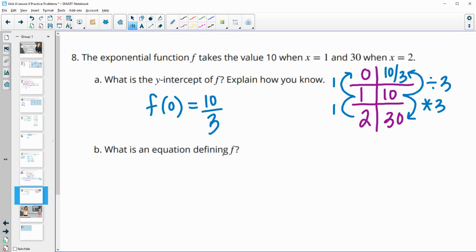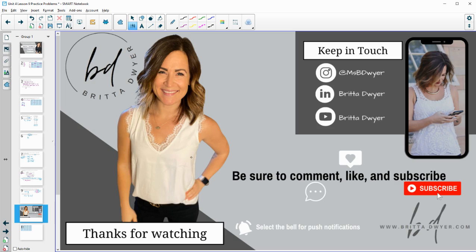Part B says, what is an equation defining f? So now we know our initial value. So if I do f of x, we have our initial value, which is 10 thirds, and then we're going to multiply by the growth factor, which is 3, and then to the x power.